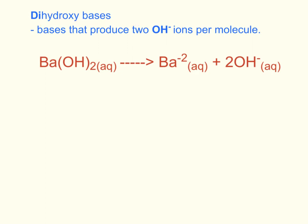Dihydroxide bases are the bases that produce two hydroxide ions per molecule of base dissolved in water. Barium hydroxide, when dissolved in water, produces two hydroxide ions per molecule. So if our solution of barium hydroxide has a molarity of 3.0, considering that each molecule gave off two hydroxide ions, the molarity of hydroxide ions in the solution is 6.0.